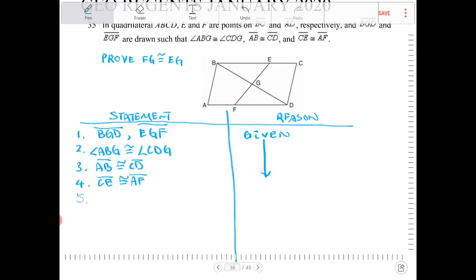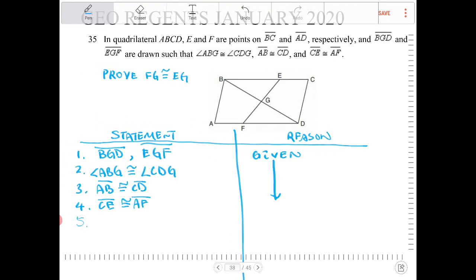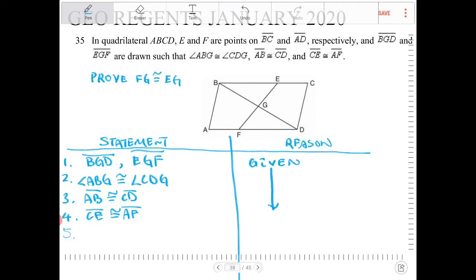So let's try to mark up the diagram here. I know that immediately ABG is congruent to CDG. So this angle over here is congruent to that angle there. That's the given.